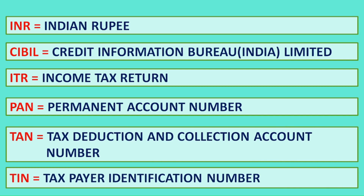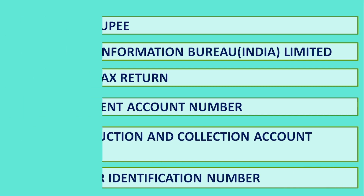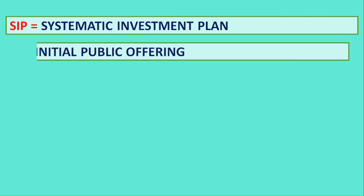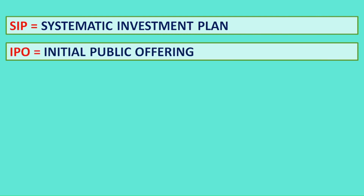TIN: Tax Payer Identification Number. SIP: Systematic Investment Plan. IPO: Initial Public Offering.